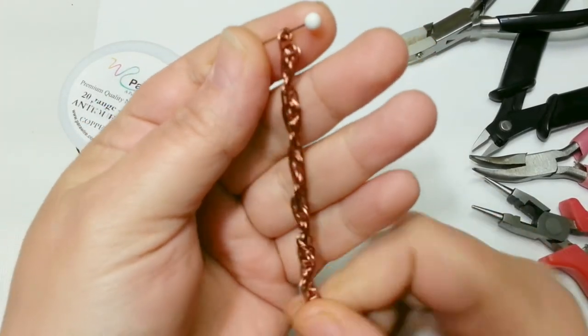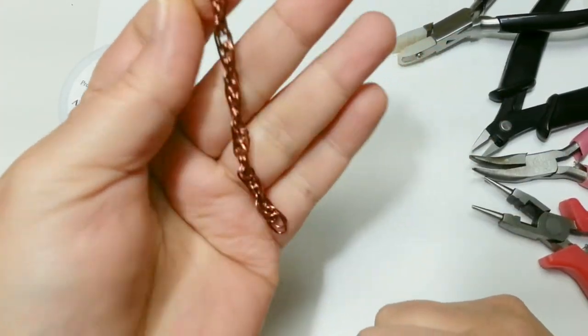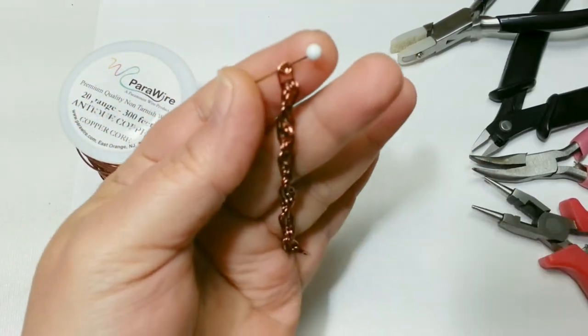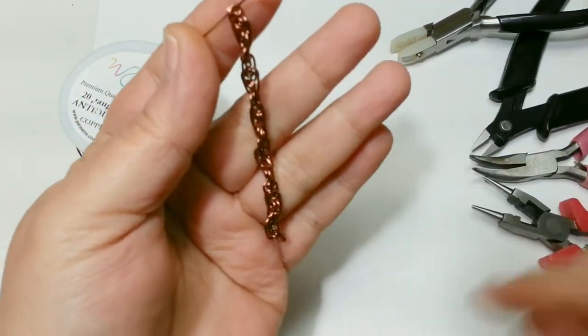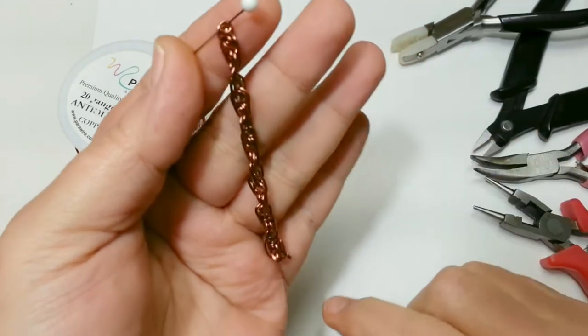So this is called a fly eye chain and this is what it looks like when you've got quite a few links. This is 22 links put together and it produces a three inch chain.